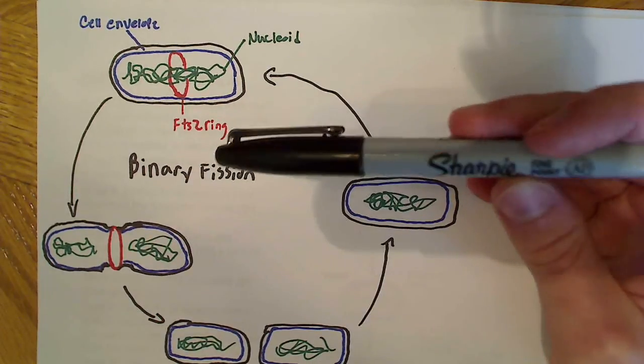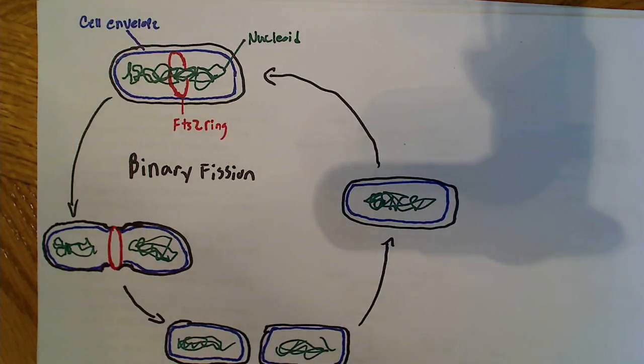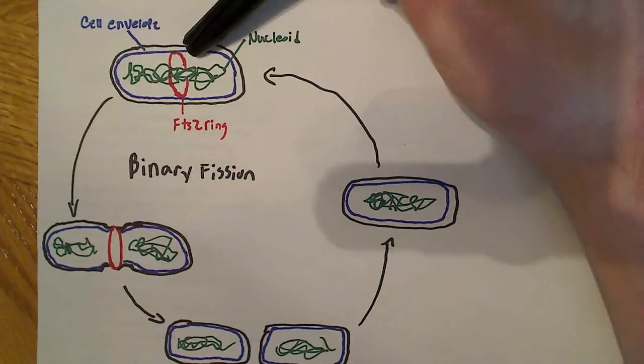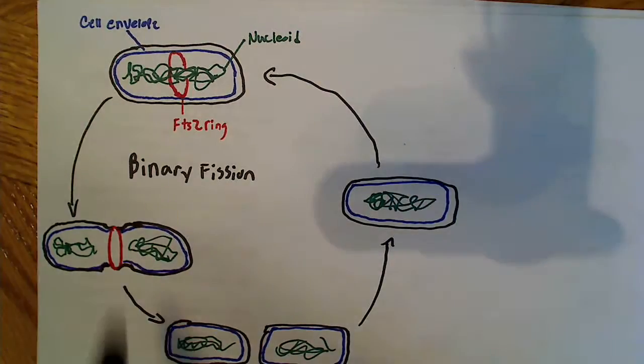And what FtsZ is really involved in is binary fission. It's involved in forming that septum, and that septum is where the cell divides. So in normal binary fission, we see that that ring forms right here in the center.